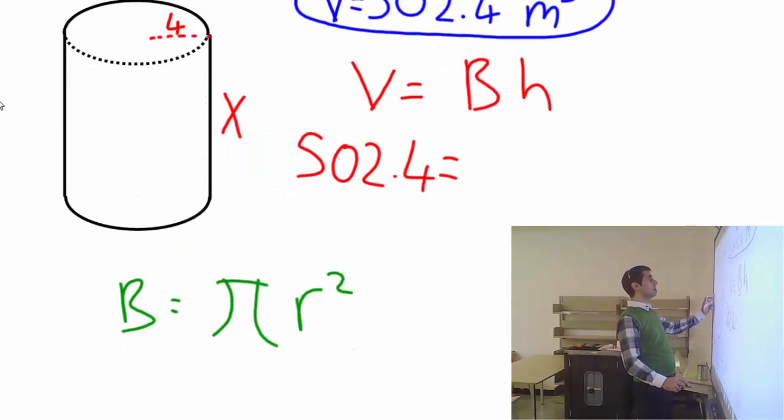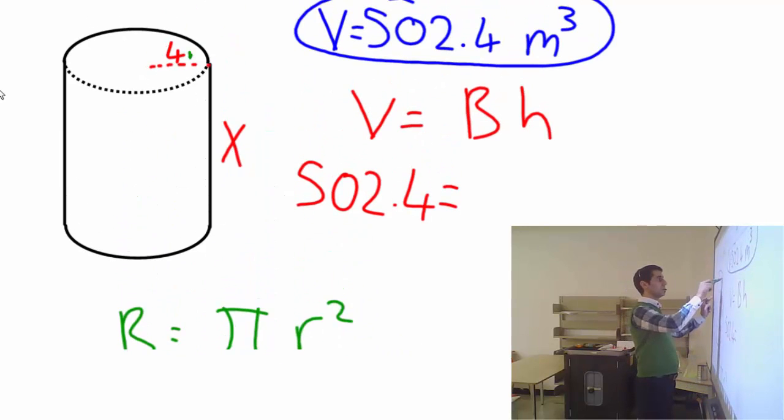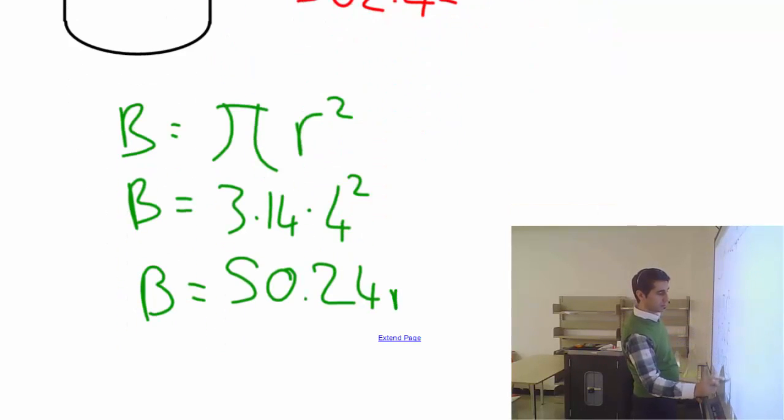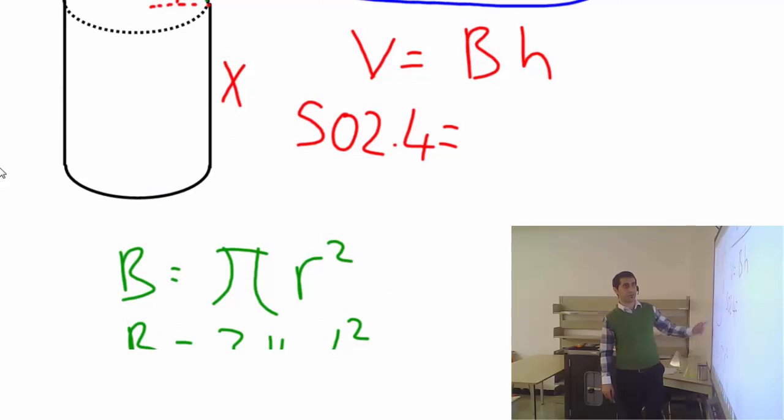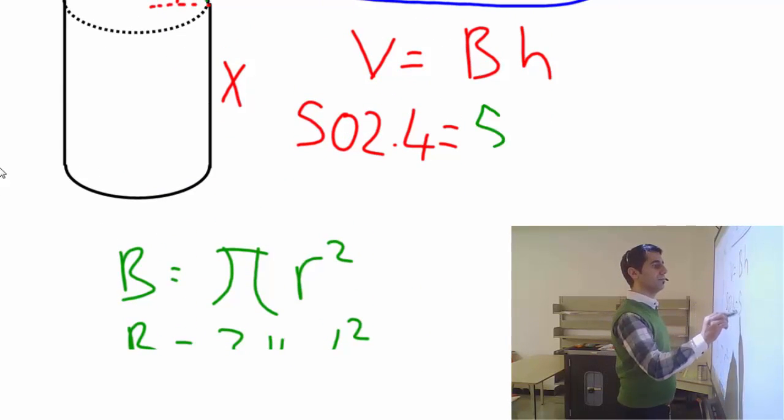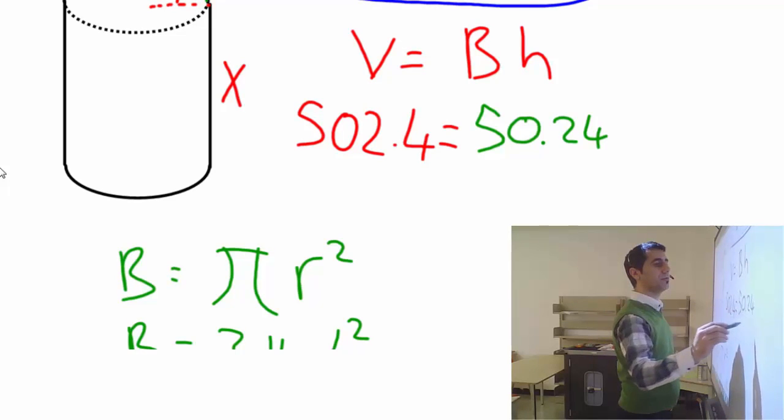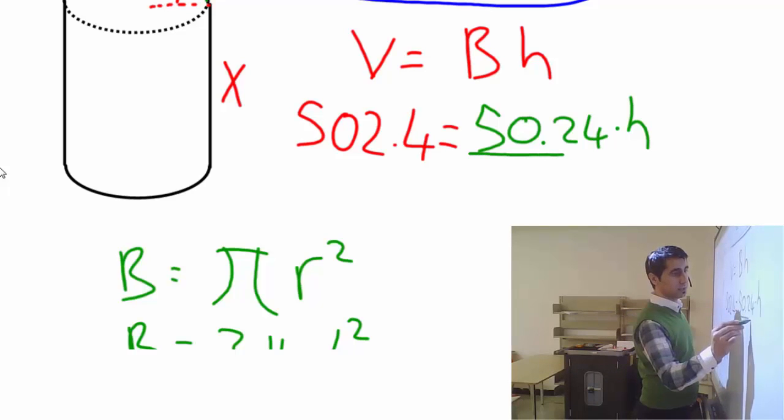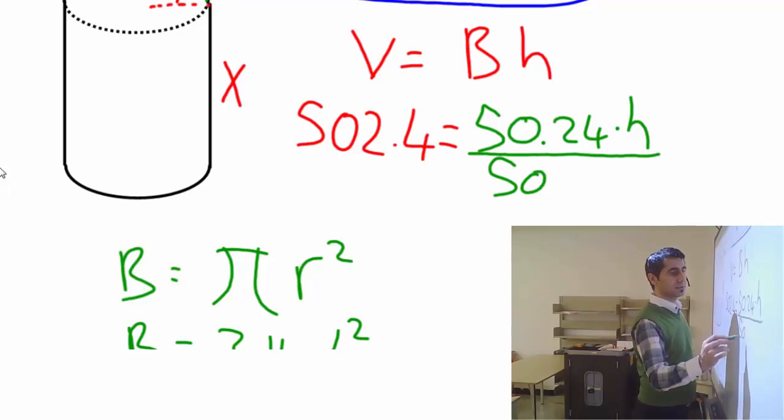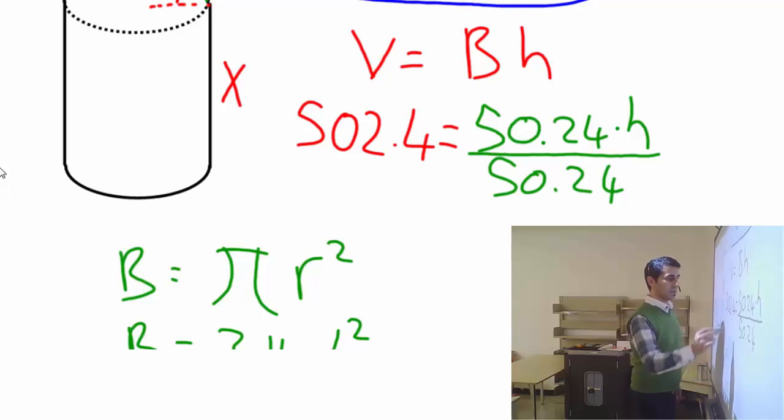Base area, we'll calculate this: 3.14 times 4 times 4 will be 50.24, and that would be square meters. Now I know the base area. Let's go ahead and replace that. 50.24 times height.